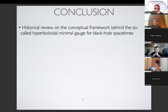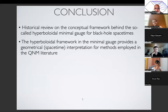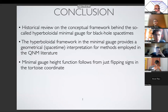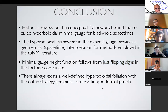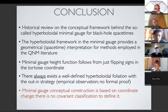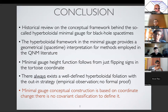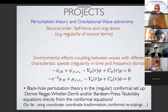Conclusions: this has been a historical review of how I've been working with what I'm calling the minimal gauge. There is an interpretation connecting with Leaver's work — I can understand what he was doing in terms of this spacetime, in terms of this geometrical picture. At the end of the day, you just have to flip the signs in the tortoise coordinate to construct this hyperboloidal foliation. My empirical observation — I don't have a formal proof — is that there always exists a well-defined hyperboloidal slicing in this out-in strategy. As I said, it's been constructed just by playing around with coordinate changes, so there's no really covariant classification like CMC where I define the slice via a geometrical quantity. But it's a concept that comes from changing coordinates. There are some projects to discuss, but I think the time is on the edge. Thanks a lot.